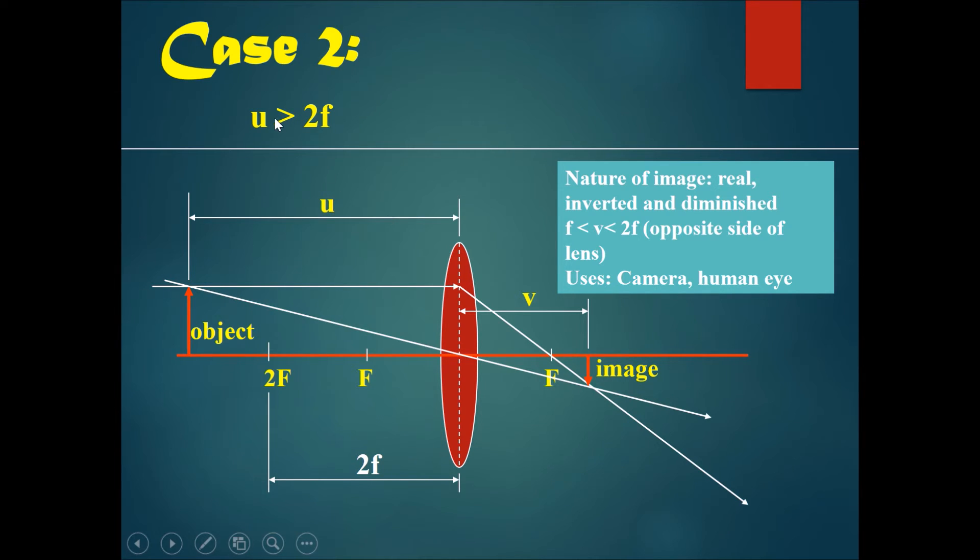We call the object distance u is more than 2f, which is more than two times the focal length of the lens. When the object's over here and you draw the lines correctly, the basic line through the center, then the parallel line, and then through the focal point, you will get the image over here.